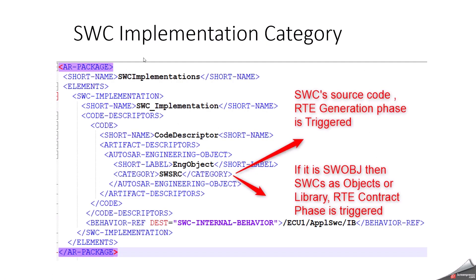This is another topic: the software component implementation category. How is the software component implementation category playing a major role during the RTE generation process? Whenever your software component is created, we have to note in what way we are going to deliver it — whether it is SWSRC (source file), object file, or header file. When we mention the category as SWSRC, the RTE generation process will trigger the generation phase. But when we mention it as an object file, it will lead to the contract phase being triggered. This is an important parameter for the RTE generation process.